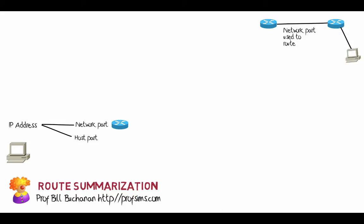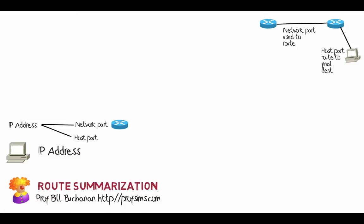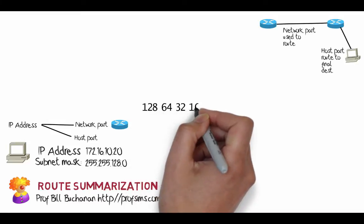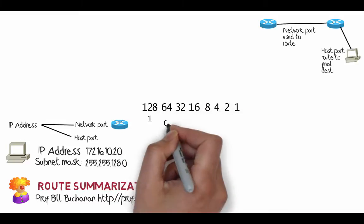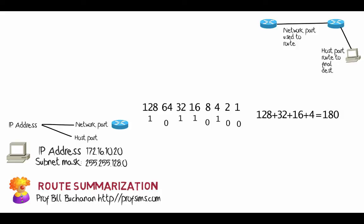The host part is used to route data packets across these interconnected devices — routers only look at the network part. The host part is used to route the last little bit. Here's an example IP address: 172.16.10.20. To define the network part we define what's called the subnet mask. In this case the subnet mask is 255.255.128.0. IP addresses use a binary format which we convert into integers.